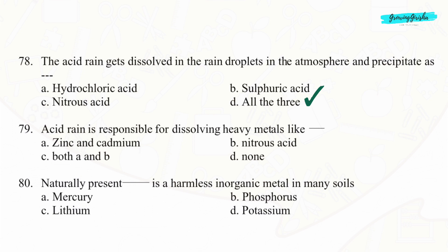Question 79. Acid rain is responsible for dissolving heavy metals like Option A: Zinc and cadmium.